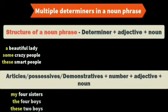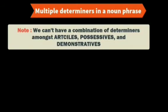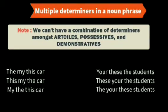The order is: articles or possessives or demonstratives, plus number, plus adjective, plus noun. For example: 'my four sisters,' 'the four boys,' 'these two boys.' Please note: we can't have a combination of determiners from articles, possessives, and demonstratives together — 'the my this car' is wrong.